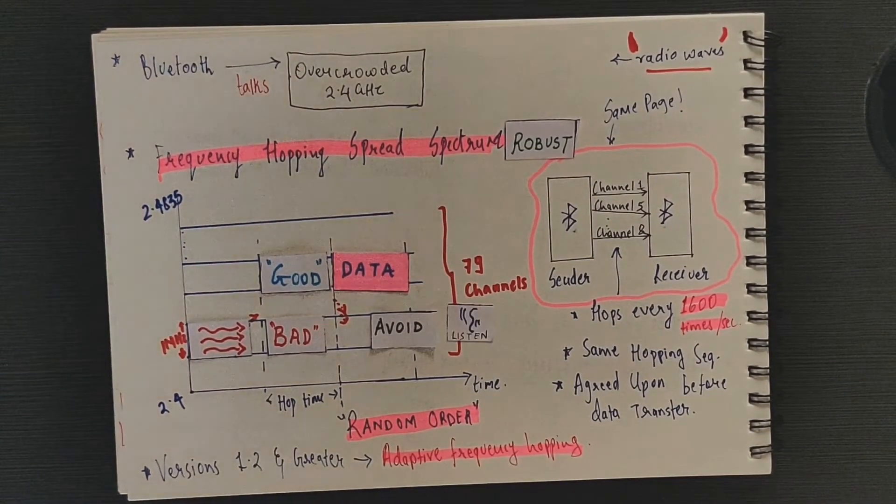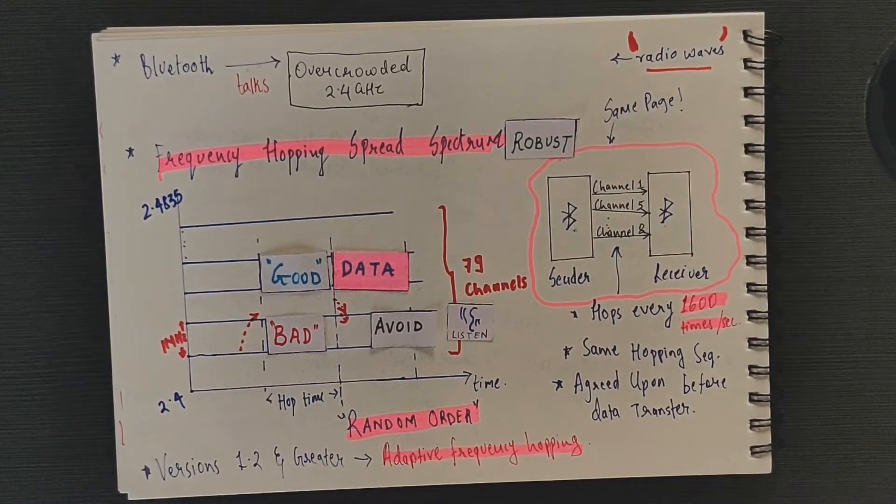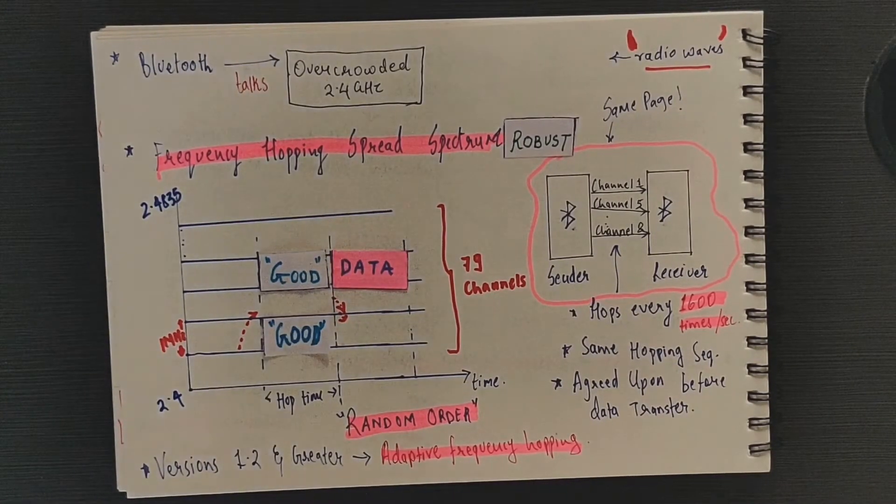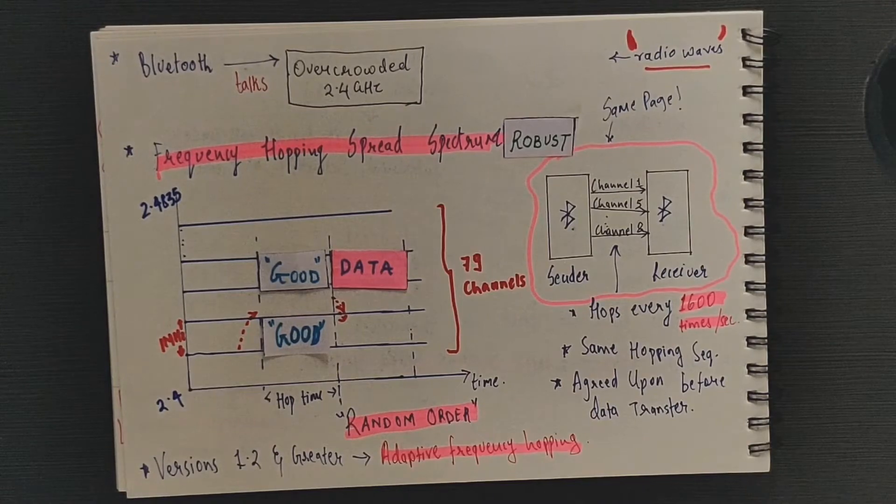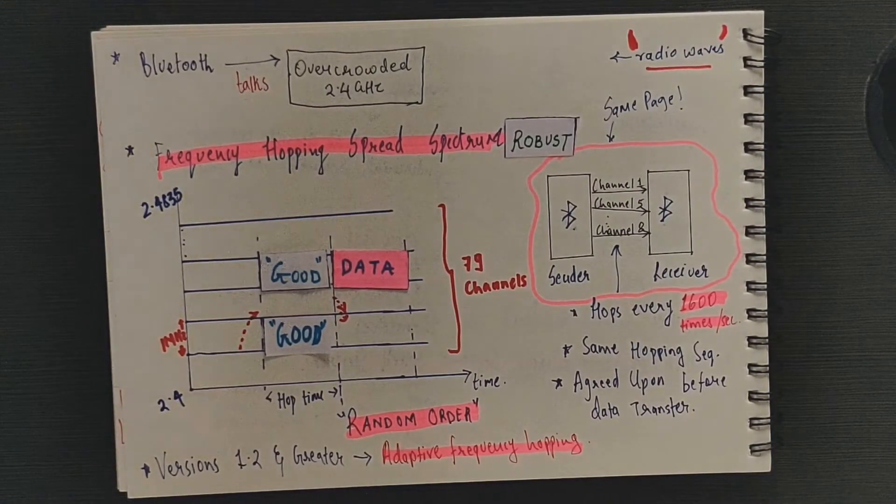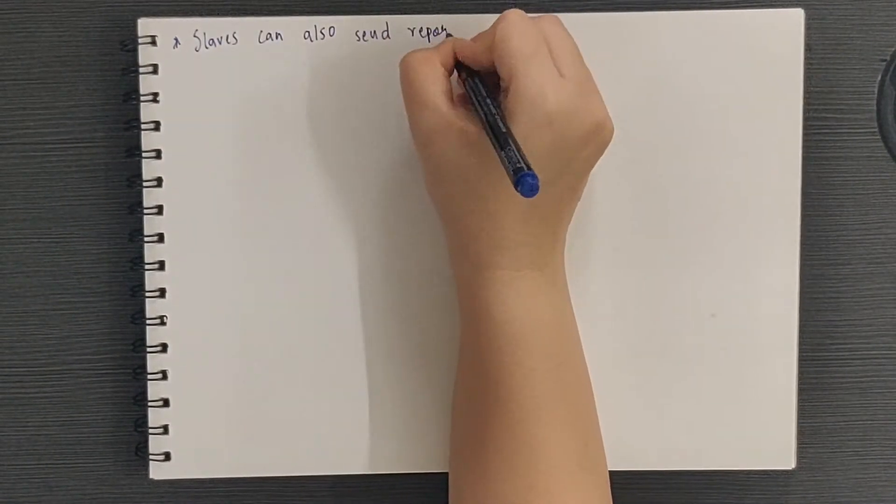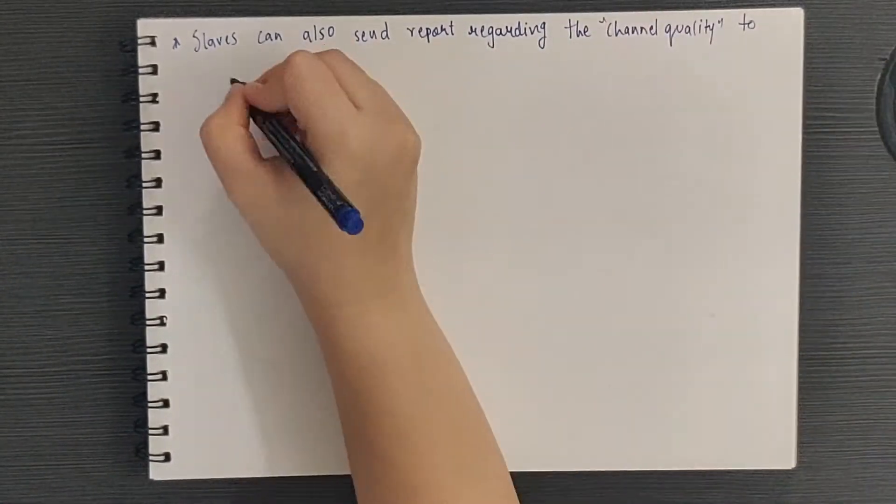The Bluetooth master may periodically listen on a bad channel. If the interference has disappeared, then that channel is marked as a good channel. Bluetooth slaves can also send reports regarding the channel quality to the master if required.